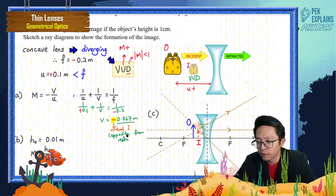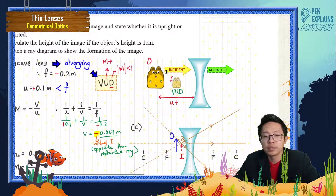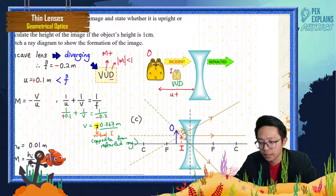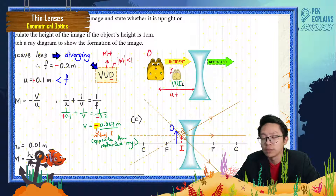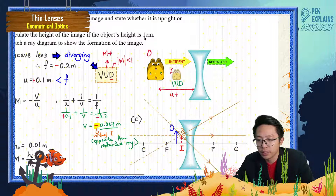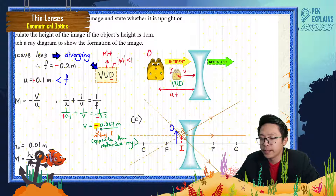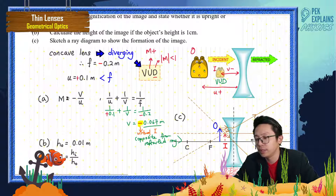You must first draw the incident ray and refracted ray. The light passes through the lens and refracts on the other side. A negative v means the image is opposite from the refracted ray — not on the same side as the refracted ray, but on the opposite side, back near the object. So the image forms over here, and v is negative.